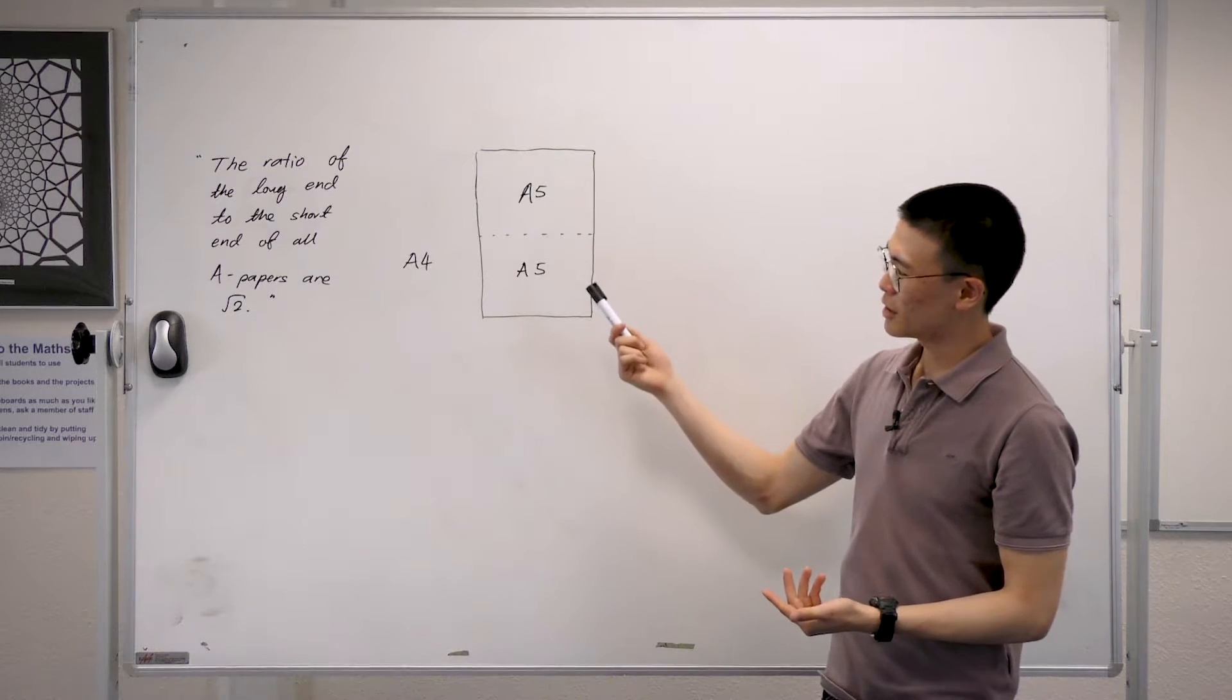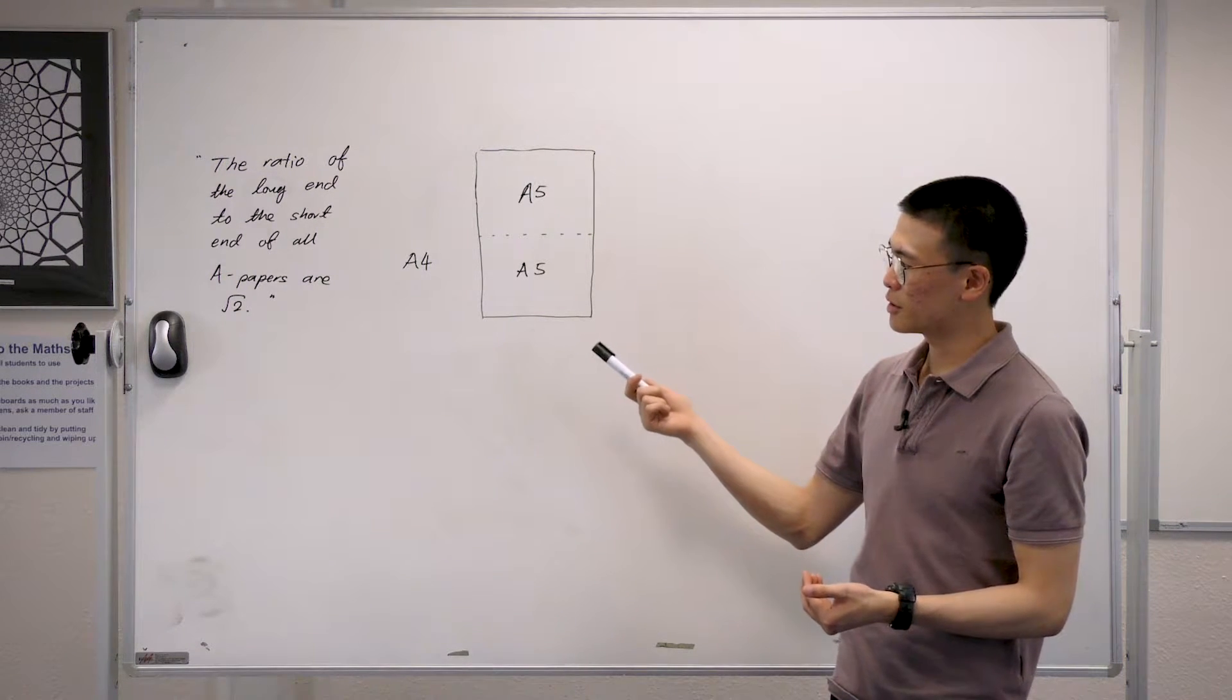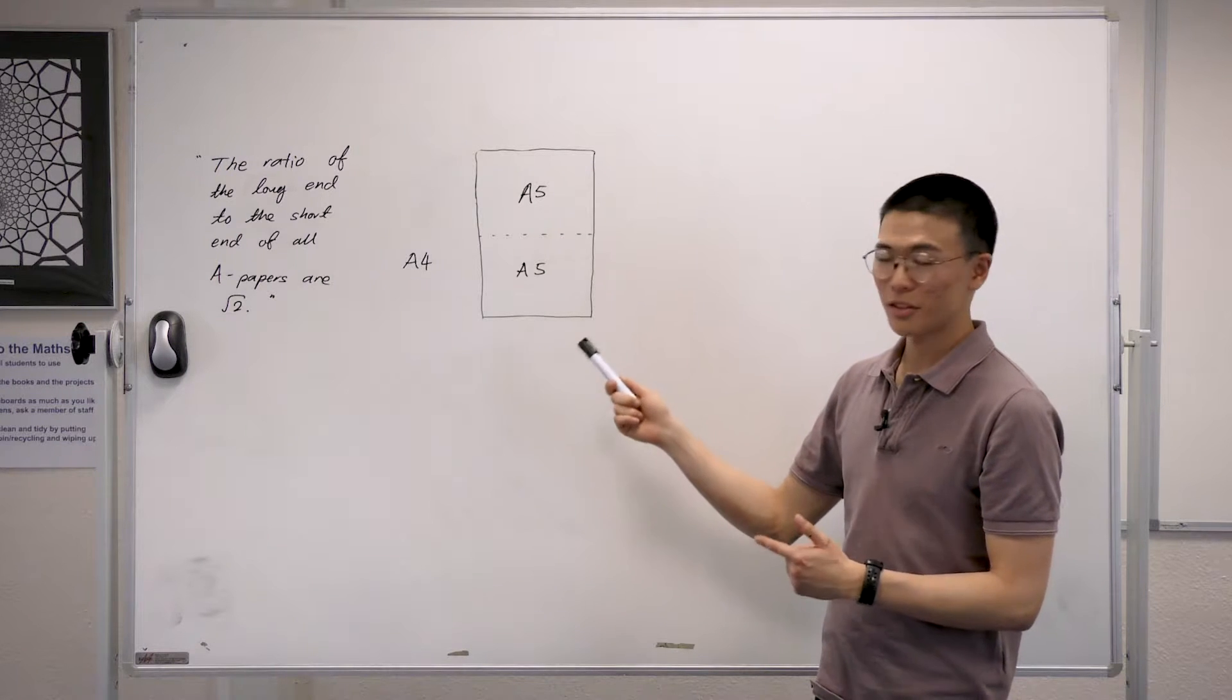Today we're going to prove that the ratio of the long end to the short end of all A-sized papers are root 2.